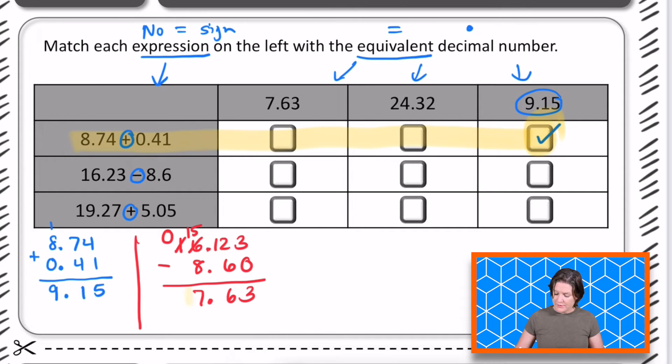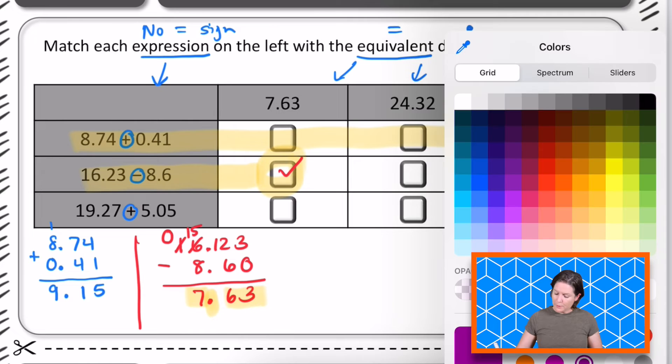All right. Read it with me. We have 7 and 63 hundredths, right? And do you see that? Yep. Right here in this one. Let me go ahead and check that one. So I'm just showing you how to scan it with your eyes to go across with your eyes and select the equivalent decimal number. All right. Let's change up the color. Let's do purple.